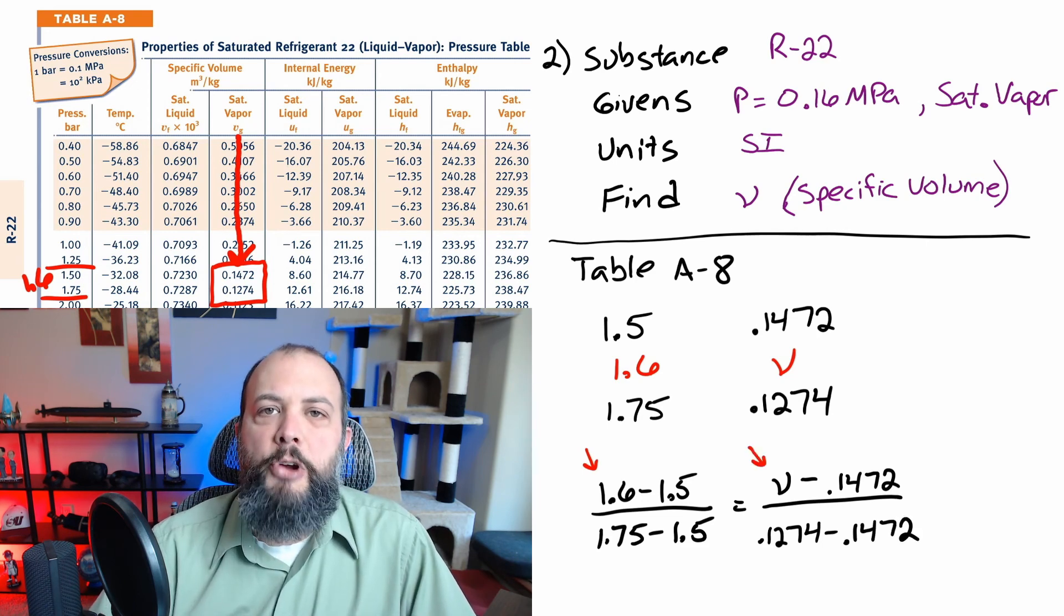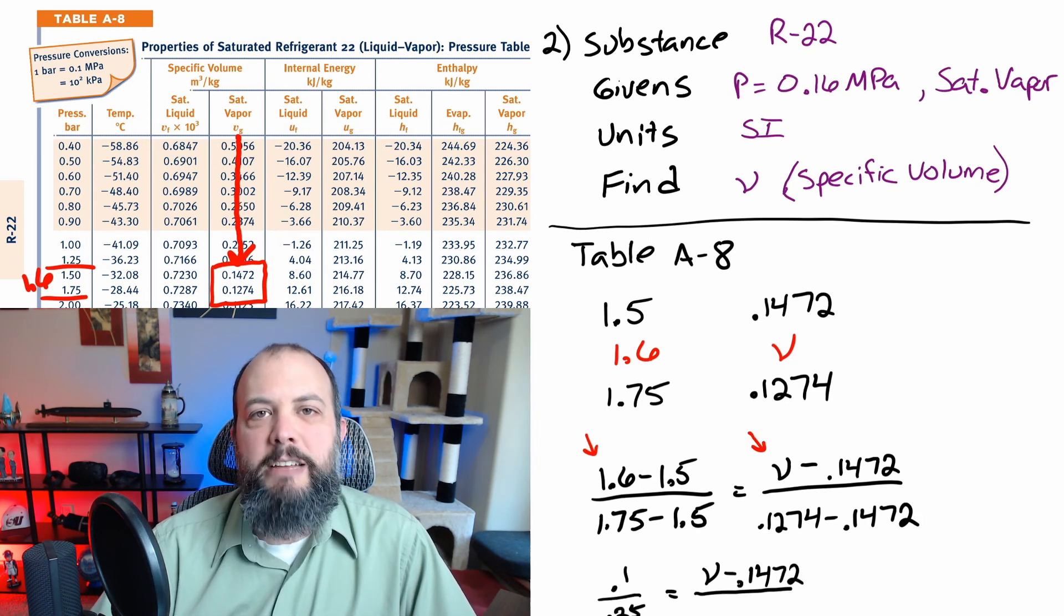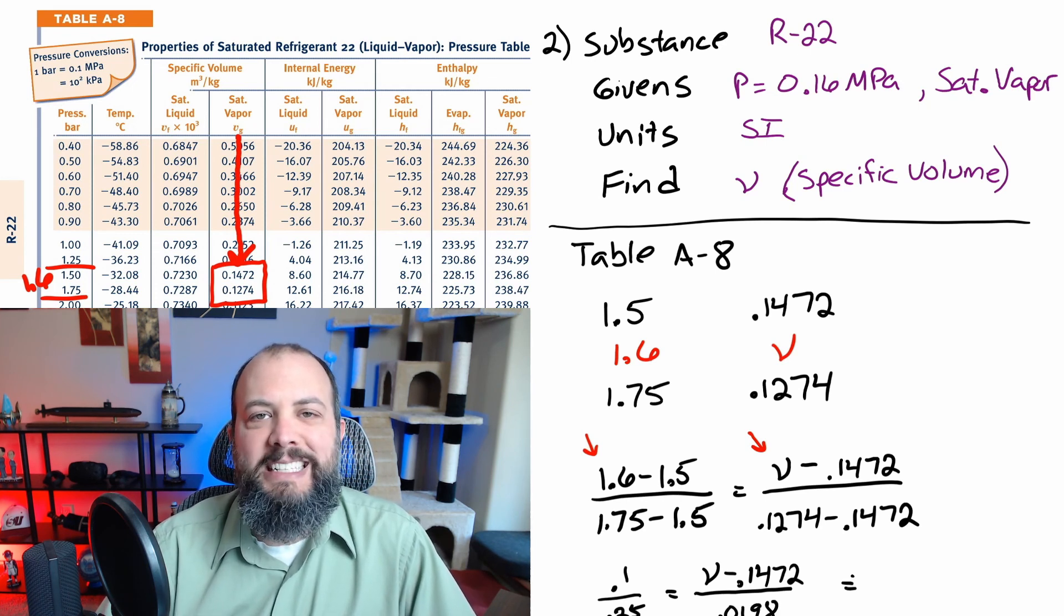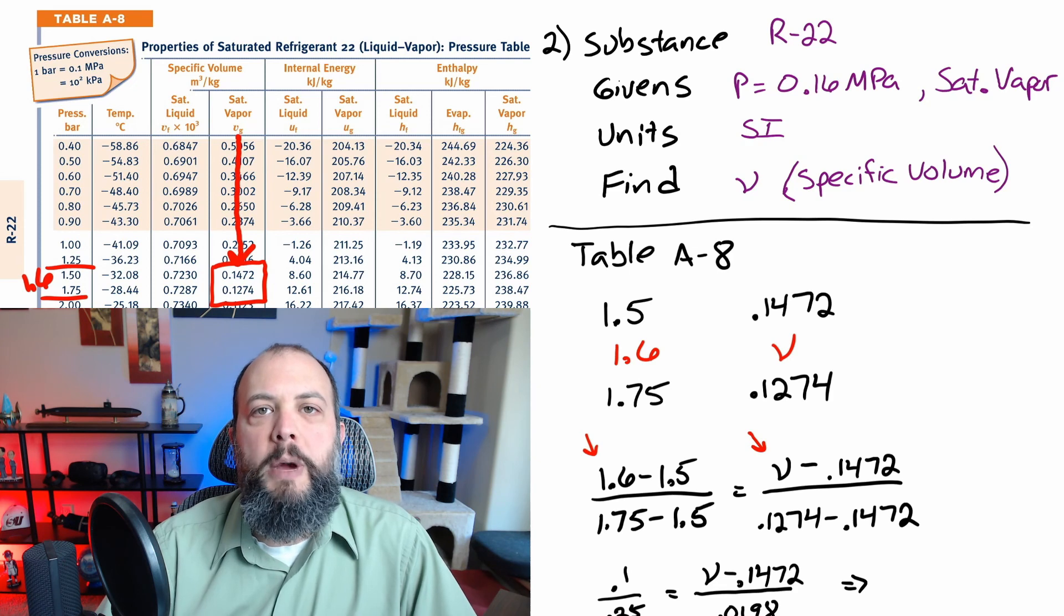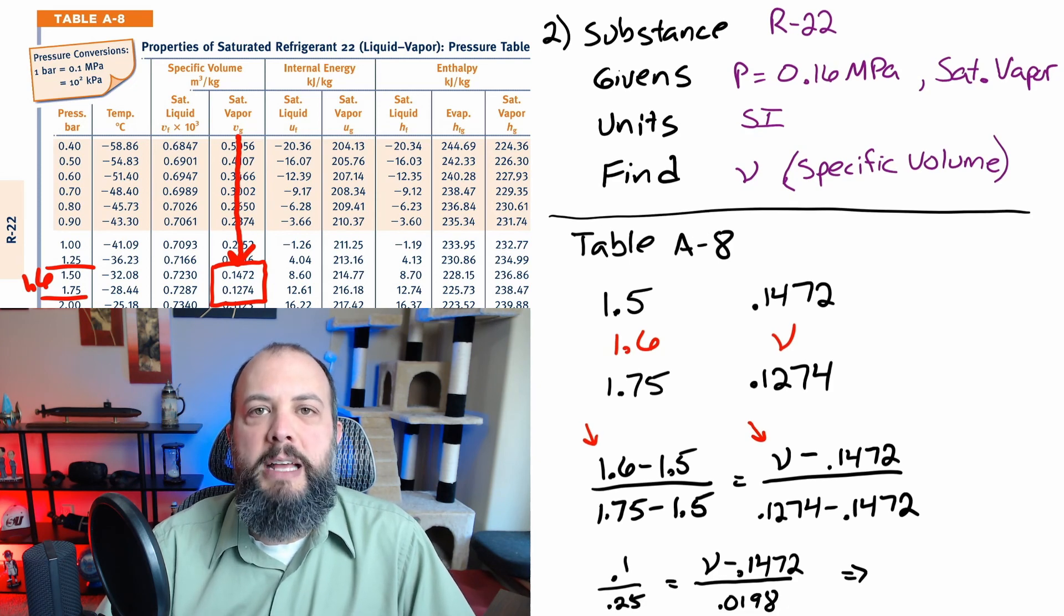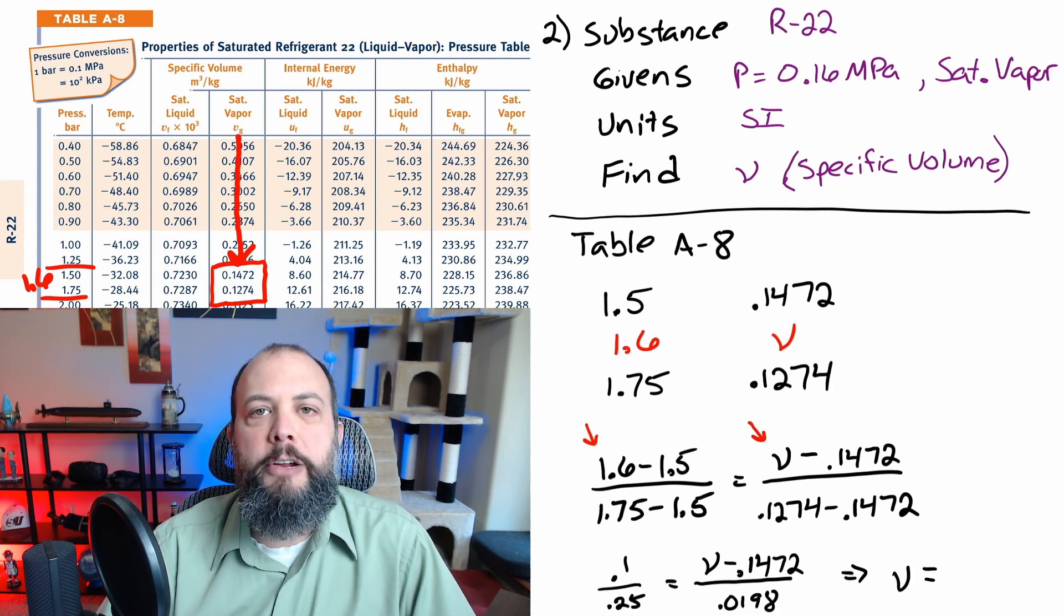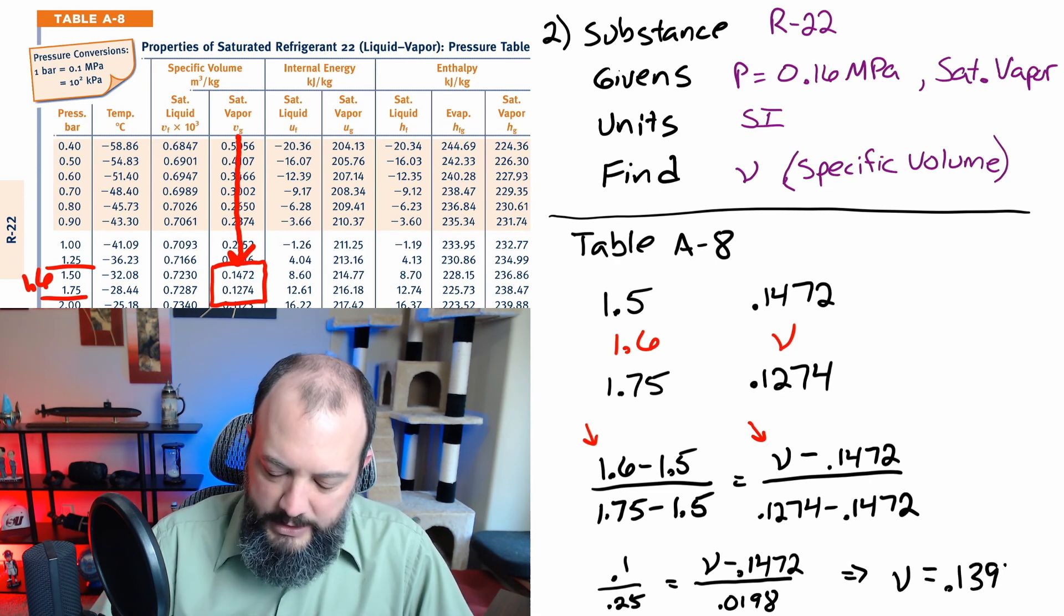It doesn't matter that each numerator and denominator here is going to be a negative number. If you wanted to switch their direction and have the 0.14 minus v and 0.14 minus 0.12 you would still get to the same answer because the minus sign in the numerator and denominator will both cancel each other out. With a little bit of calculator work you get specific volume equal to 0.1393.